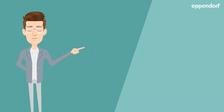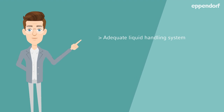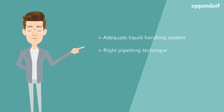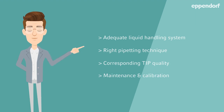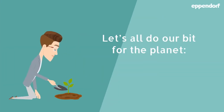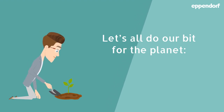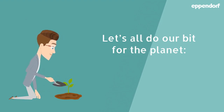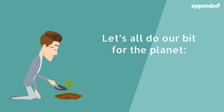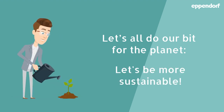Remember to choose the adequate liquid handling system — manual, electronic, or even an automated solution. Develop the right pipetting technique, select the corresponding tip quality, and keep your pipetting system well maintained and calibrated. Considering our hints will help contribute towards your overall sustainability and achieving accurate and reproducible results.